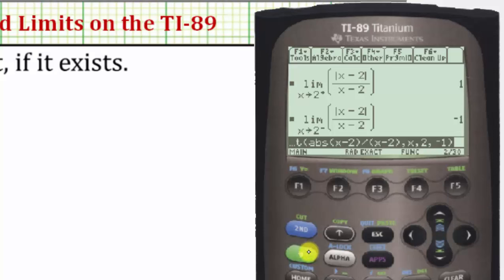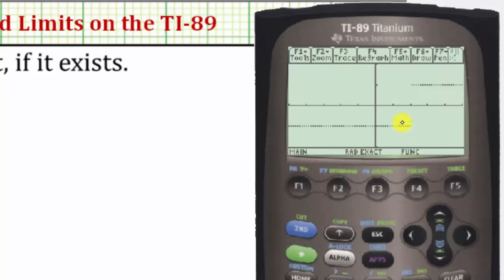Going back to the graph one last time by pressing diamond F3, notice how this verifies our limit — as we approach two from the left or negative side, we are approaching a function value of negative one.